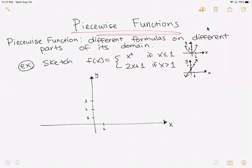So let's look at the example. It says f of x is equal to x squared if x is less than or equal to 1. We know that the shape of x squared is a parabola, and it's a U-shape.